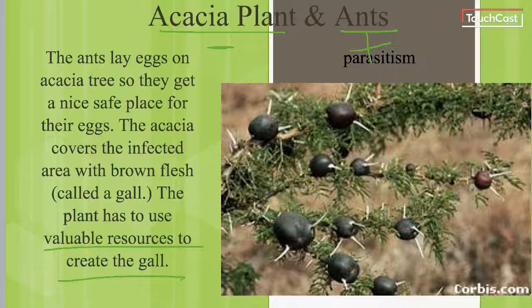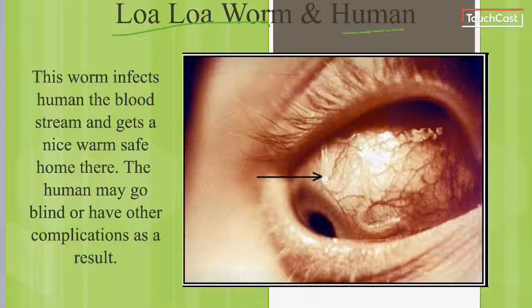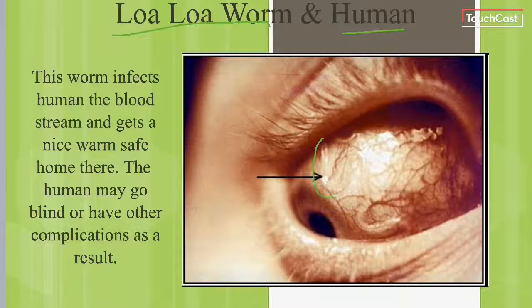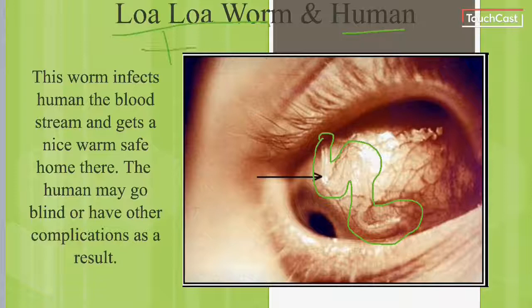One of my favorites — the loa loa worm and the human, and this is real. This worm infects the human bloodstream and gets a nice warm safe home. The human may go blind or have other complications. The loa loa worm feeds off of human blood from the eye — it is the positive. The negative is the human, because the human is losing blood, which we need to live.